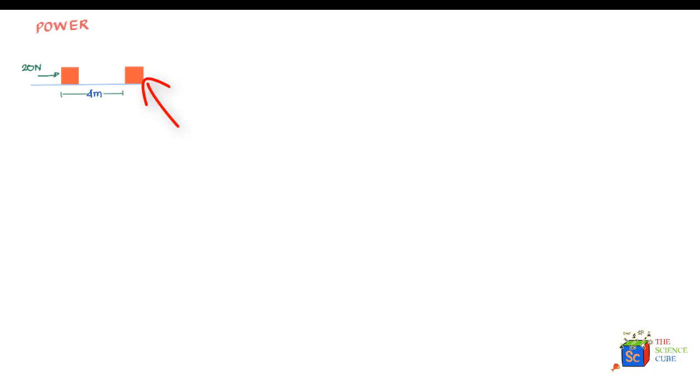Let us say you have a mass m lying on the floor and a force of 20 newtons is impressed on this mass. As a result of this force, the mass moves 4 meters across and reaches this point. Now, what is the work done by this force? The work done is equal to the dot product of force and displacement. So in this case the force is 20 newtons and the displacement is 4 meters.